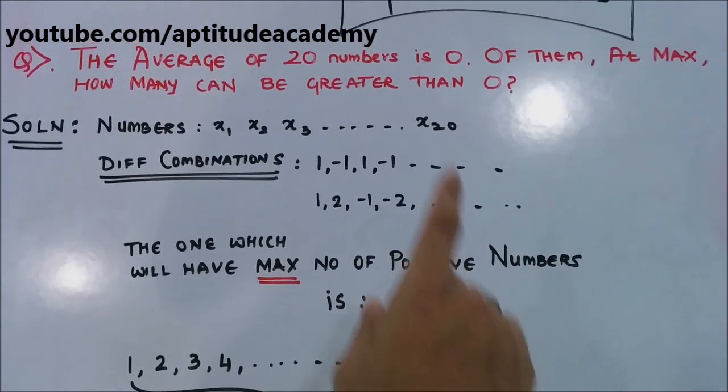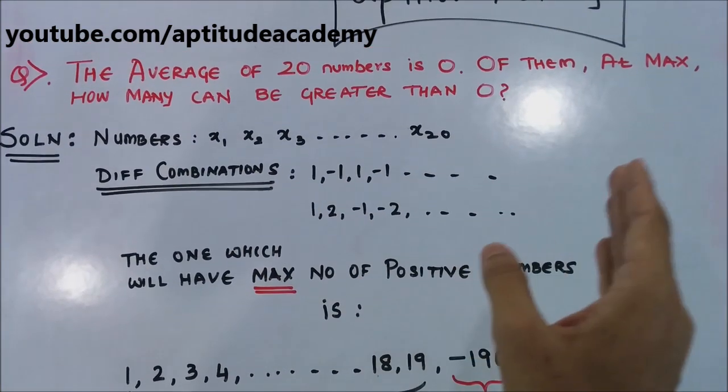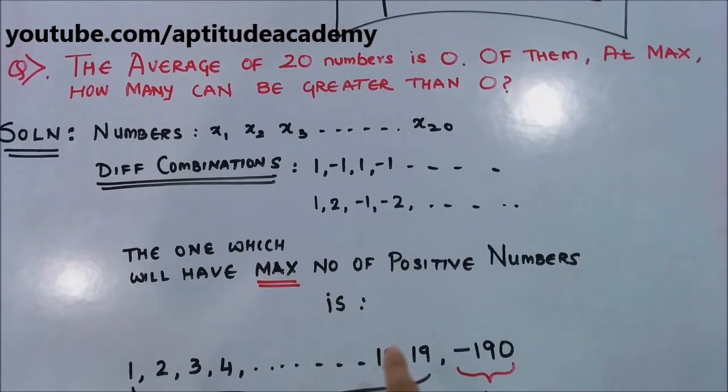So now you can generalize this completely. If you have the average of n numbers is 0, at maximum, your positive numbers will be n minus 1 terms.